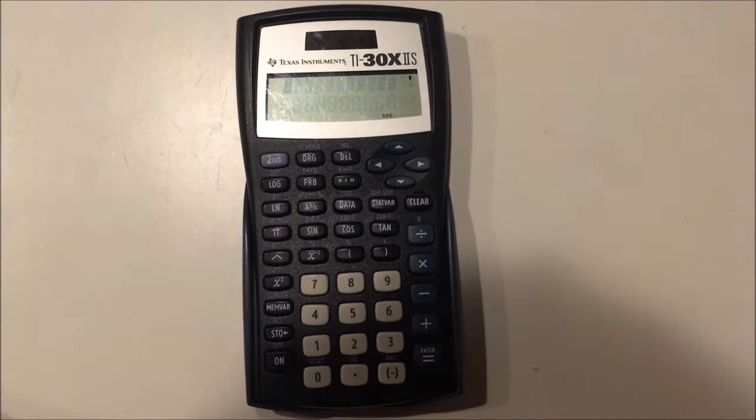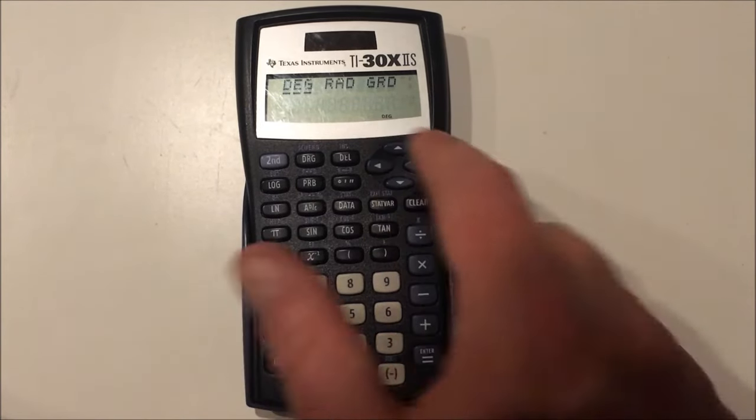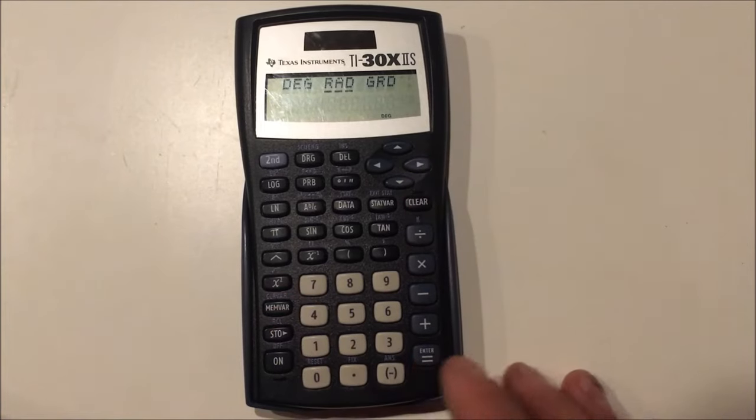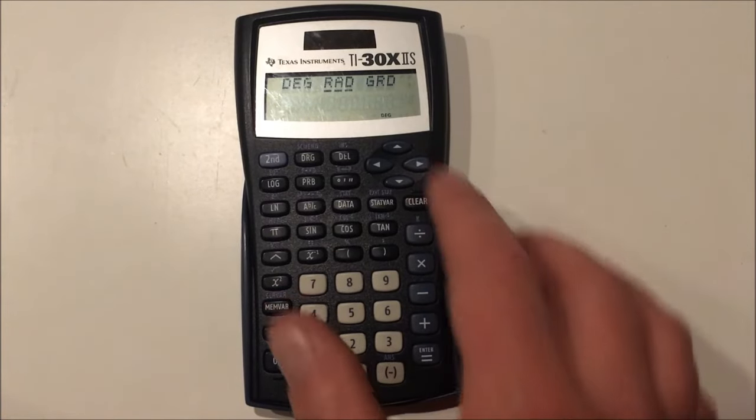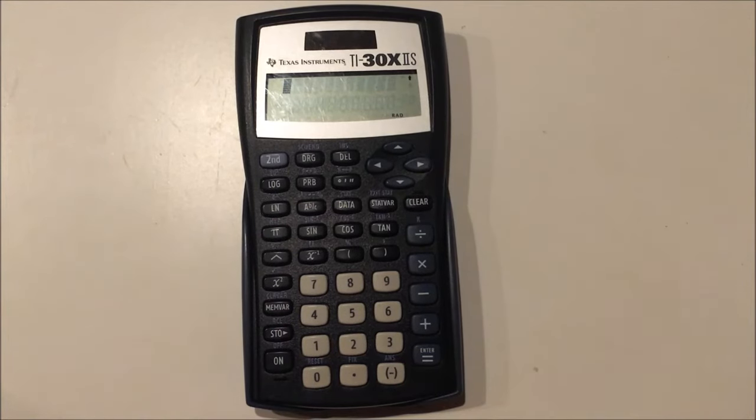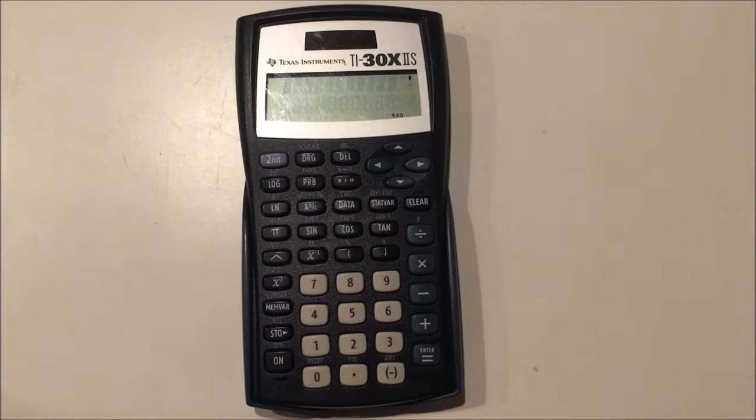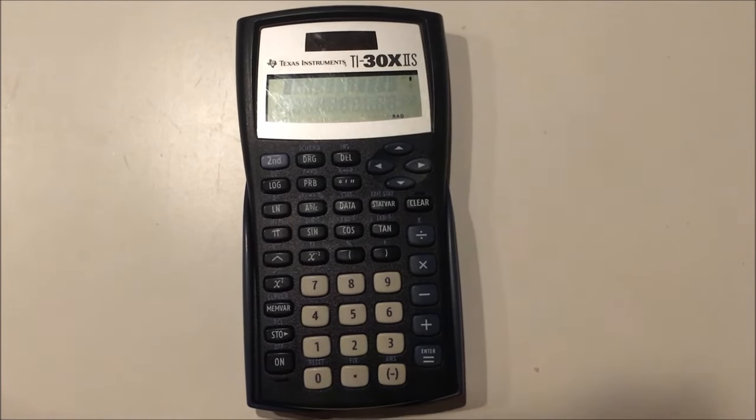Now if I were to adjust what type of angles I use, for example, this DEG down here would change. So let's say I switch to radians by pressing the right arrow and pressing enter. You can see now, RAD is highlighted instead of DEG, so you know you're in radian mode.